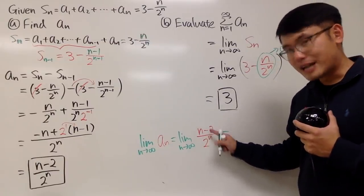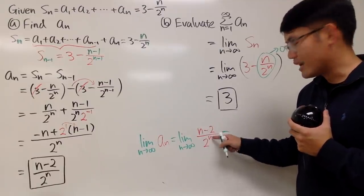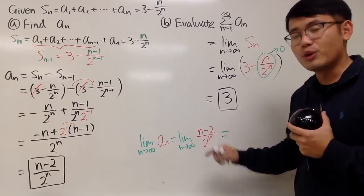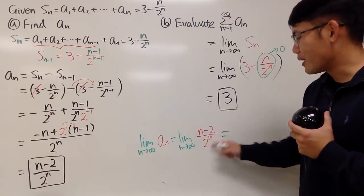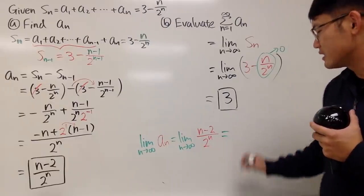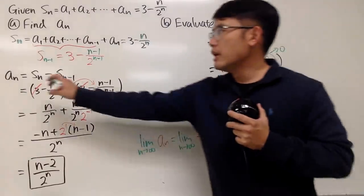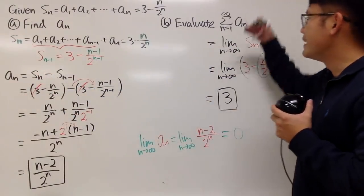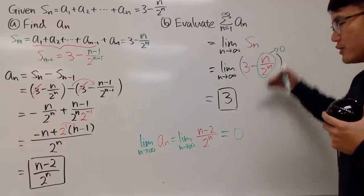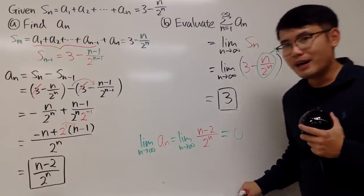You see that on the top, it's just $n^1$ power minus 2. Compared to $2^n$, this is going to be 0 by the list, because the top is so much smaller than the bottom. Yeah, when you have the $b^n$'s power by the list. So this is equal to 0. So again, $a_n$ converges to 0. And this right here, the $S_n$ converges to 3. That's the idea.